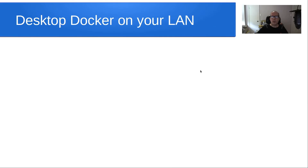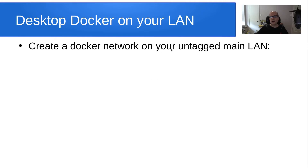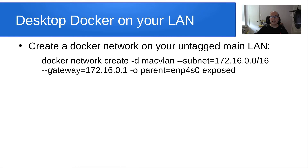You can also create a desktop Docker container on your LAN, leveraging what we learned in the last video. We create a Docker network on your untagged main LAN. I'm creating a MacVLAN Docker network on my subnet of 172.16.0.0/16. Yours might be 192.168.1.0/24. I'm putting in my gateway address of 172.16.0.1 — yours might be 192.168.1.1. The parent is enp4s0, the name of my Ethernet device, and I'm calling this network 'exposed'.